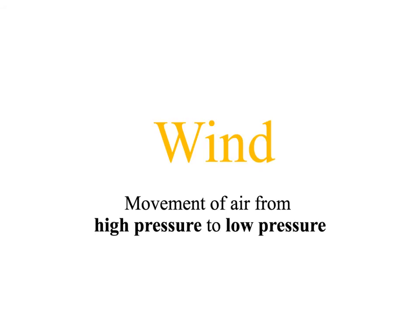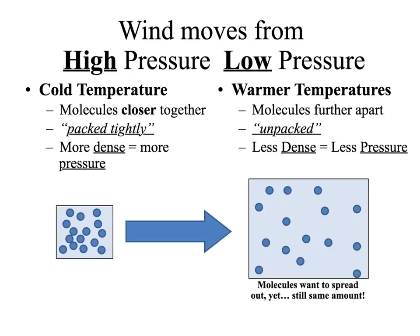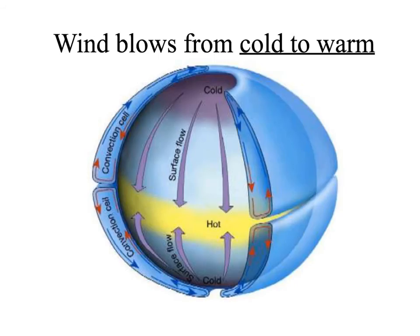Wind is moving air, and air always moves from an area of high pressure to an area of low pressure. Cold temperature means the molecules are closer together, packed tightly, more dense, more pressure. Low pressure means warmer temperatures, molecules are farther apart, less dense. So high pressure is cold and dry, densely packed; low pressure is warm air, less dense, spread out. Based on this, winds are always going to blow from cold areas to warm areas, because cold areas are high pressure and high pressure always pushes low pressure out of the way.